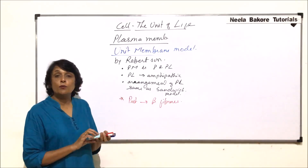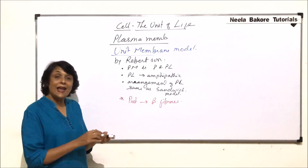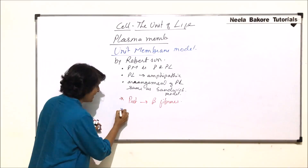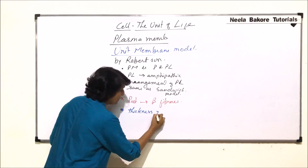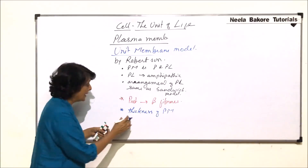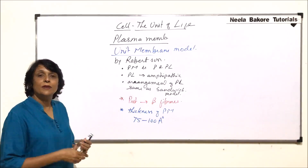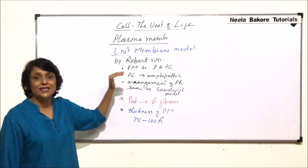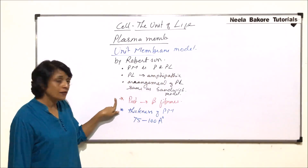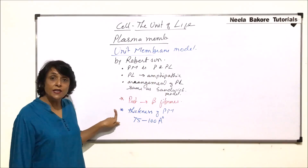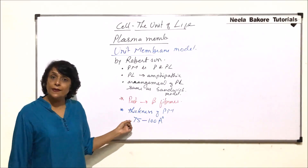The arrangement of proteins and phospholipid is the same as given by Danielli-Davson. There was one extra piece of information given by Robertson: the thickness of the plasma membrane was mentioned by him. The thickness is 75 to 100 angstroms.